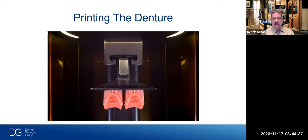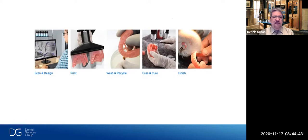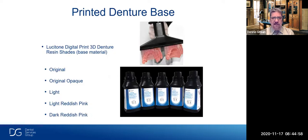To make a printed try-in look more natural, I take some hot aesthetic colored waxes and go over the nicely contoured printed try-in — it's more cost-effective than full denture-base staining and gives a great aesthetic look for the patient and the dental office. Once approved, we proceed to print the final denture. The five steps for the Lucitone printed denture are: scan and design, send information to the Carbon printer, wash and recycle, diffuse, cure, and finish. The printed denture base now comes in five shades from original Lucitone to dark reddish pink, all looking very natural.